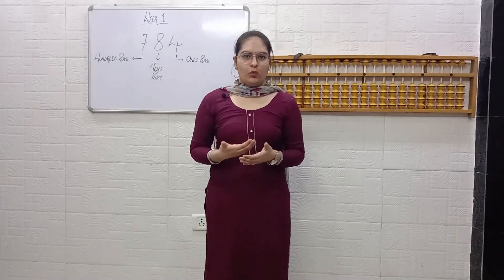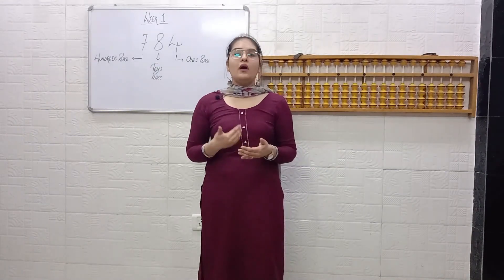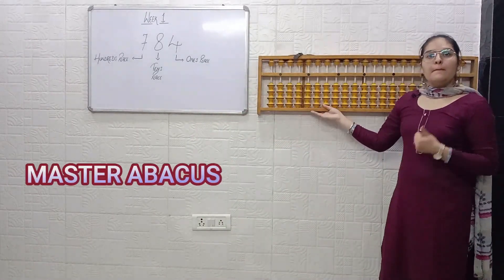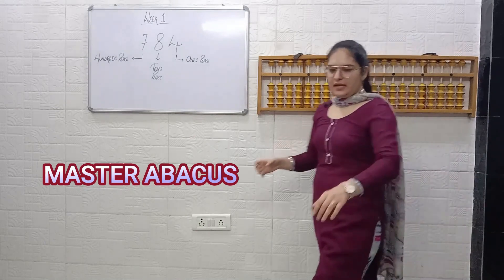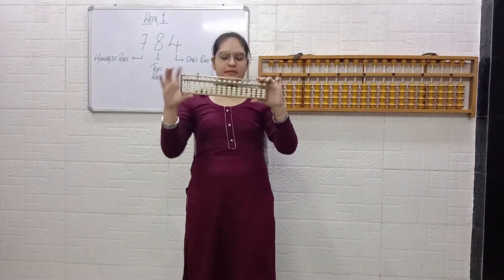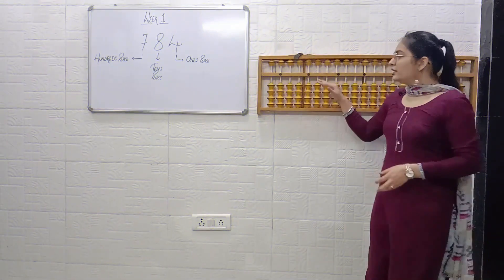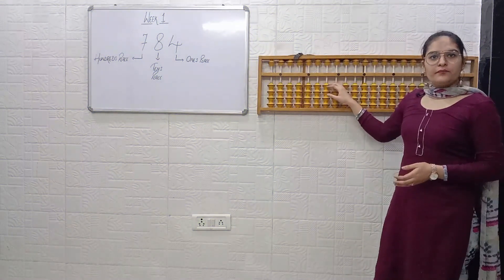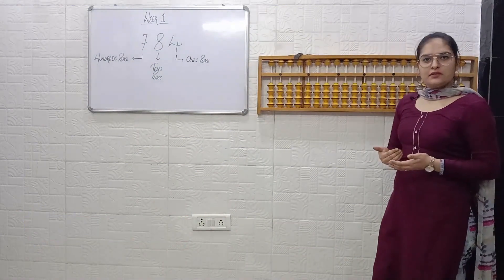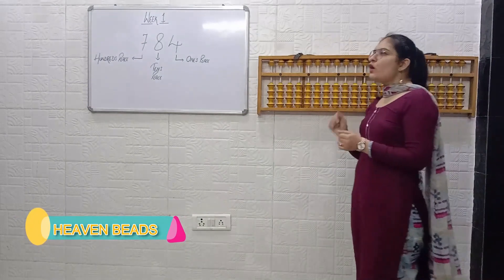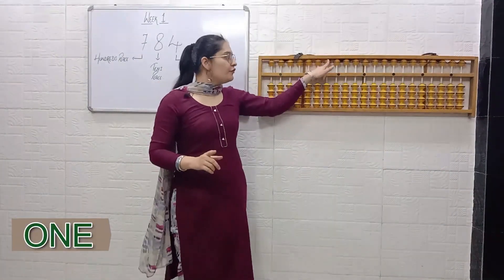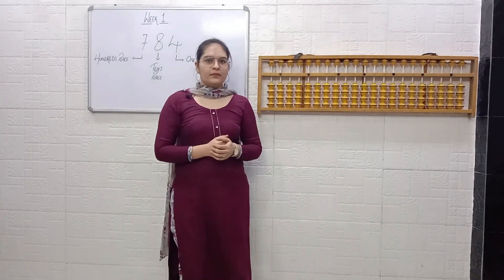Let's revise one more time and then we will move to how to read the beads. This is the Master Abacus and this is the Student Abacus. The beads which are downwards are Earth beads. The beads which are upwards are Heaven beads. Value of Earth beads is 1. Value of Heaven beads is 5.